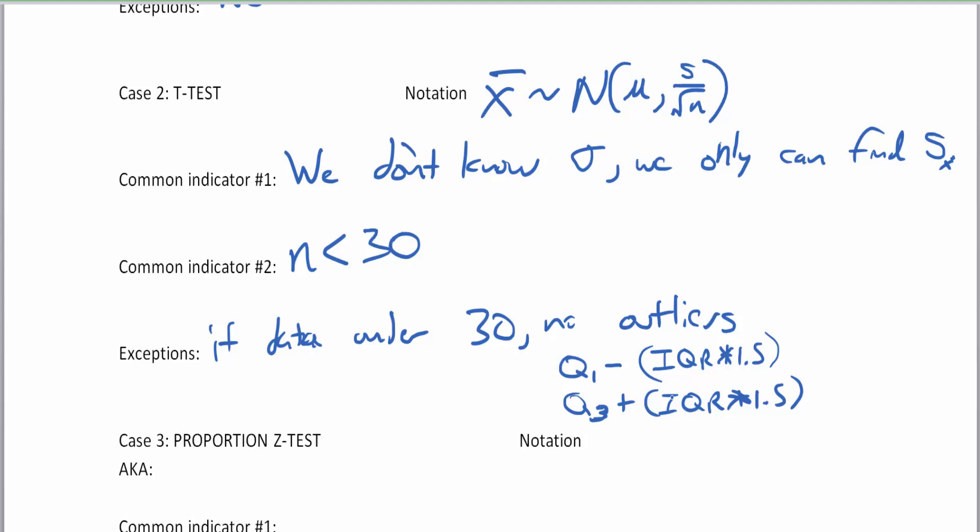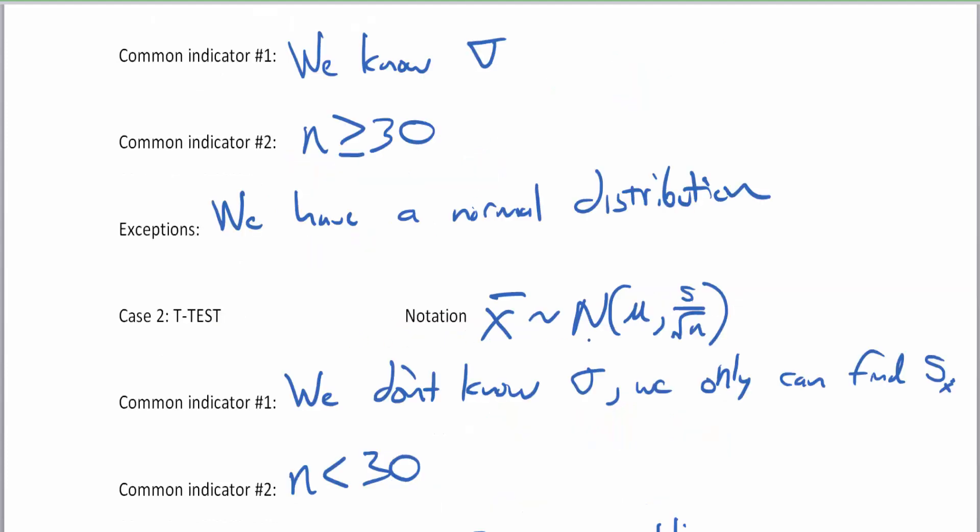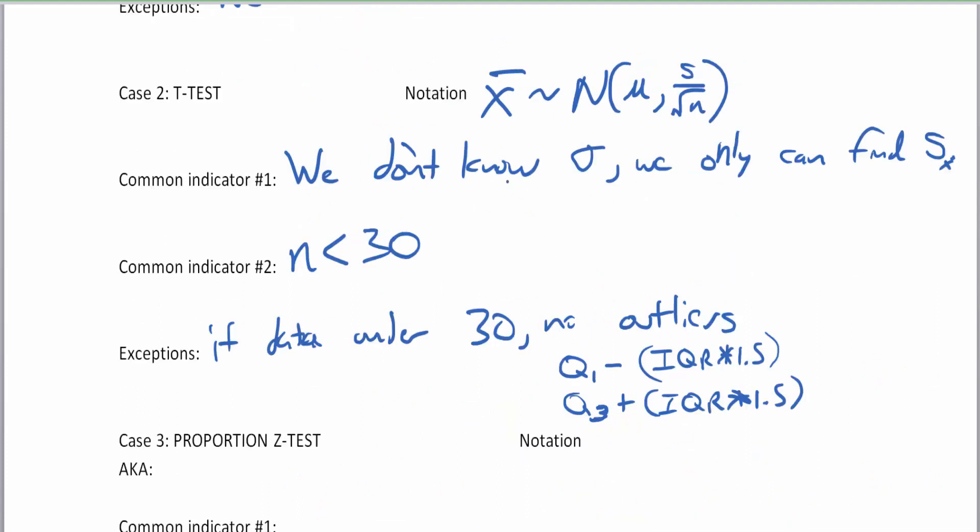So in summary, if you have standard deviation and a big sample size, use the z-test. However, sometimes with a small sample size and knowing standard deviation, and if we have a normal distribution, you can still do the z-test. t-test: if we don't know standard deviation, pretty much you're locked into that. The small sample size is great, that's another indicator to use the t-test. But also make sure that you have no outliers.